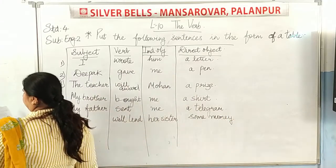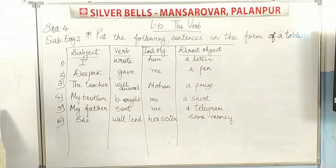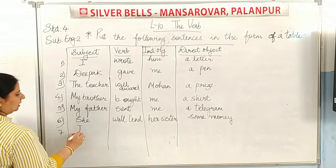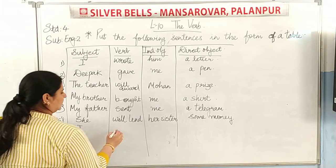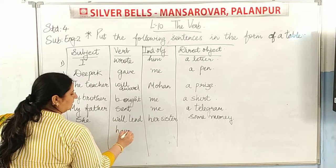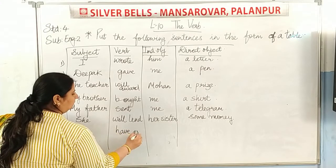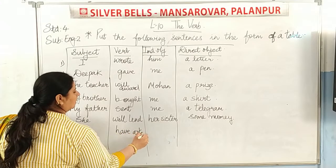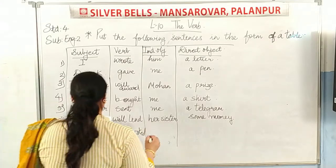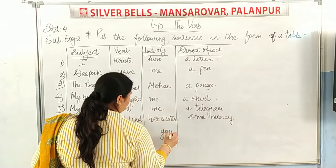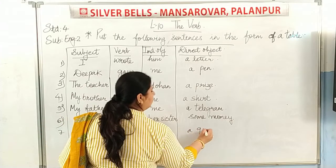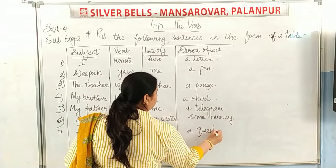Seventh sentence: 'I have asked you a question.' I is the subject, have asked is the verb, you is the indirect object, and a question is the direct object.